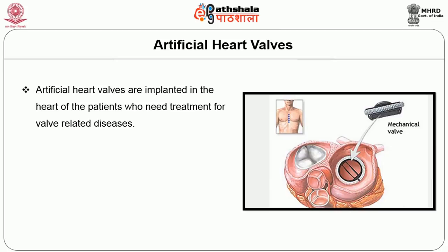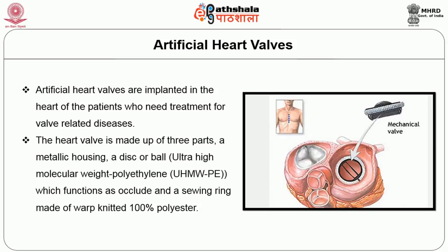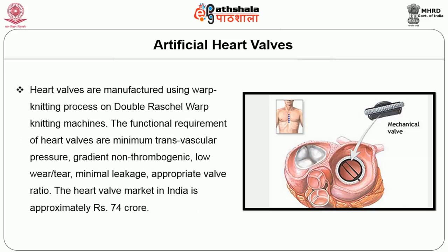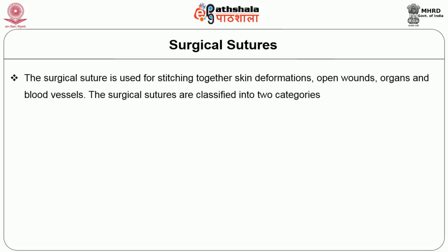Artificial heart valves are implanted in patients who need treatment for heart diseases. The heart valve is made up of three parts: a metallic housing, a disc or ball which functions as an occluder, and a sewing ring made out of warp-knitted 100% polyester. Heart valves are manufactured using the warp knitting process on double-raschel warp knitting machines. The functions required for heart valves are minimum transvascular pressure, non-thrombogenic properties, low wear and tear, minimum leakage, and approximate valve ratio. The heart valve market in India is approximately Rs. 74 crores.